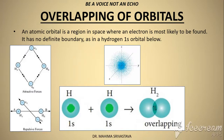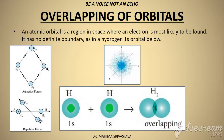Now let's proceed with the overlapping of orbitals. When two atoms approach each other or pass close to each other, there is some partial merge or some overlap between the two orbitals. This overlapping of orbitals forms a covalent bond. The covalent bond is formed, which is strong or weak, depends on how much overlap there is. If the overlap is more, then it will become a strong bond. And if the overlap is less, then it will become a weak bond.